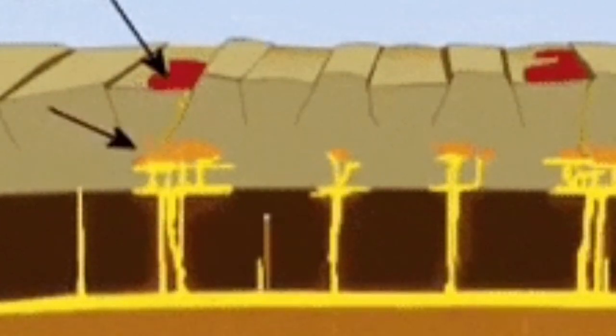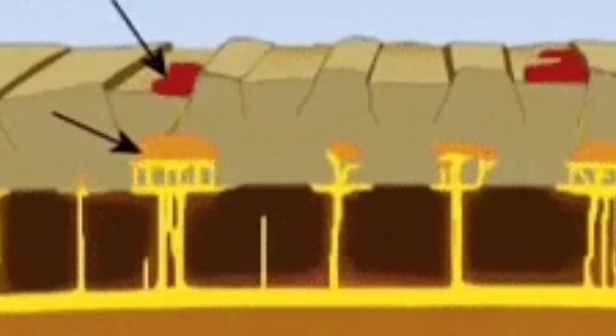That means something has cooled it down. Those big blocks of rock falling into it have cooled it down. So that's the reason the magma didn't rise.